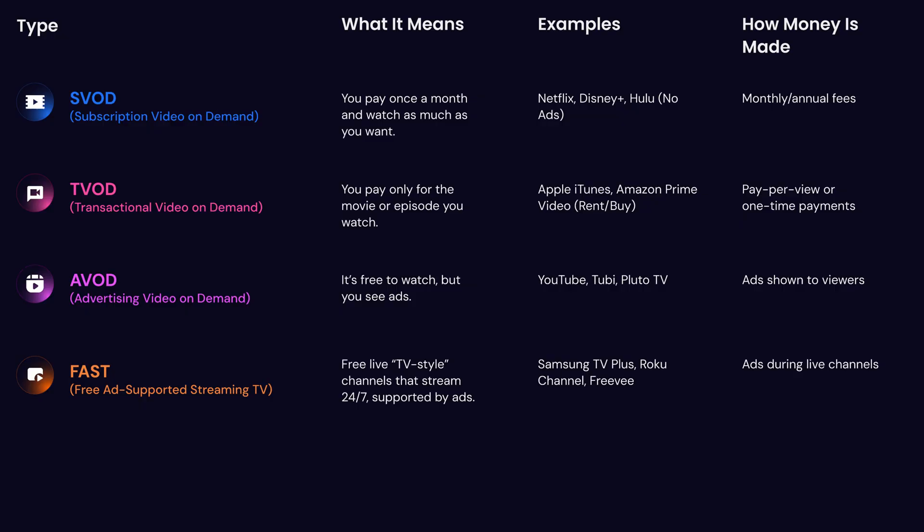We then have FAST — free ad-supported streaming TV. When I show you guys apps such as Freebie TV or Tubi TV, those have live TV sections that are playing content 24/7. But you have to watch some ads in order to watch it, which then is making money for the owner.